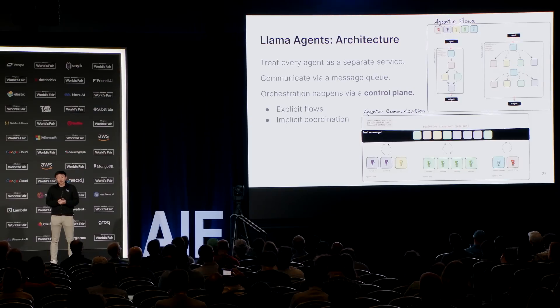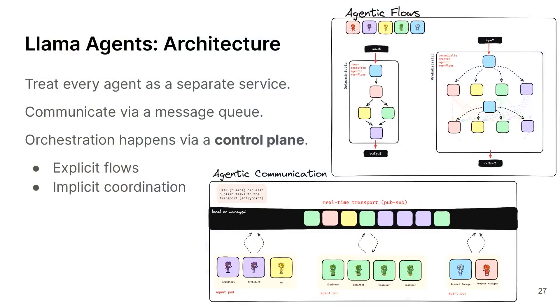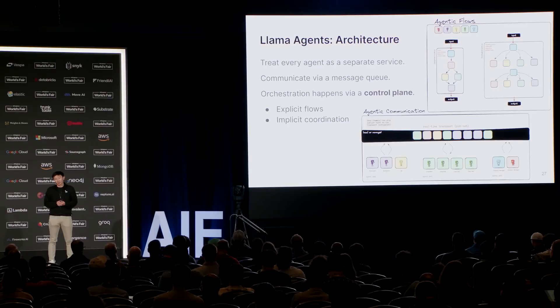The core architecture is that every agent is represented as a separate service. You can write the agents however you want — with Llama Index or another framework — and we have interfaces to build a custom agent and deploy it as a service. Agents can interact with each other via a message queue, and orchestration happens between agents via a general control plane. We took some inspiration from existing resource allocators like Kubernetes and other systems-level open-source projects. The orchestration can be either explicit, where you explicitly define the flows between services, or implicit, where an LLM orchestrator figures out what tasks to delegate given the current state of things.